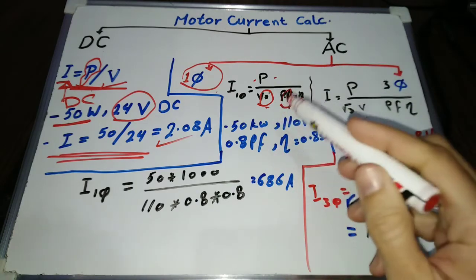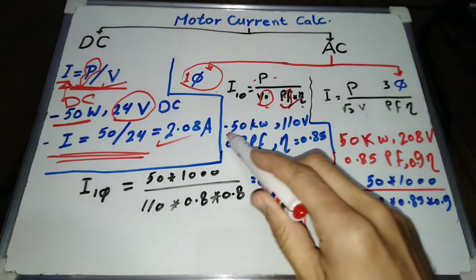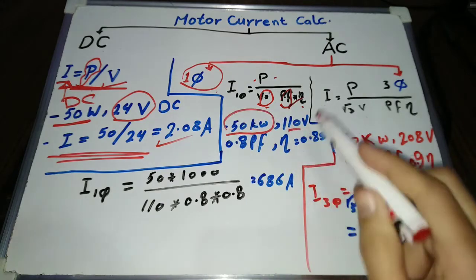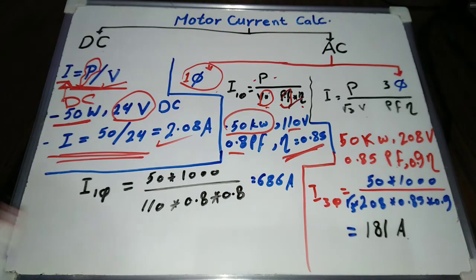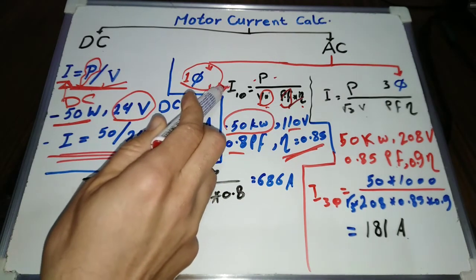Let's have an example. Assume a motor of 50 kW, 110 volts, 0.8 power factor, and 0.85 efficiency. To calculate this motor current, apply the single phase motor current formula.